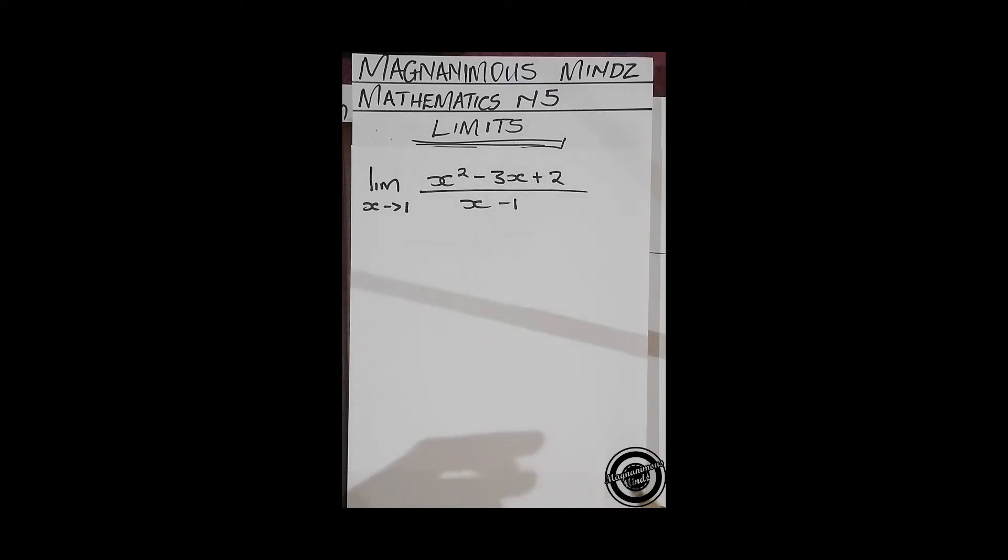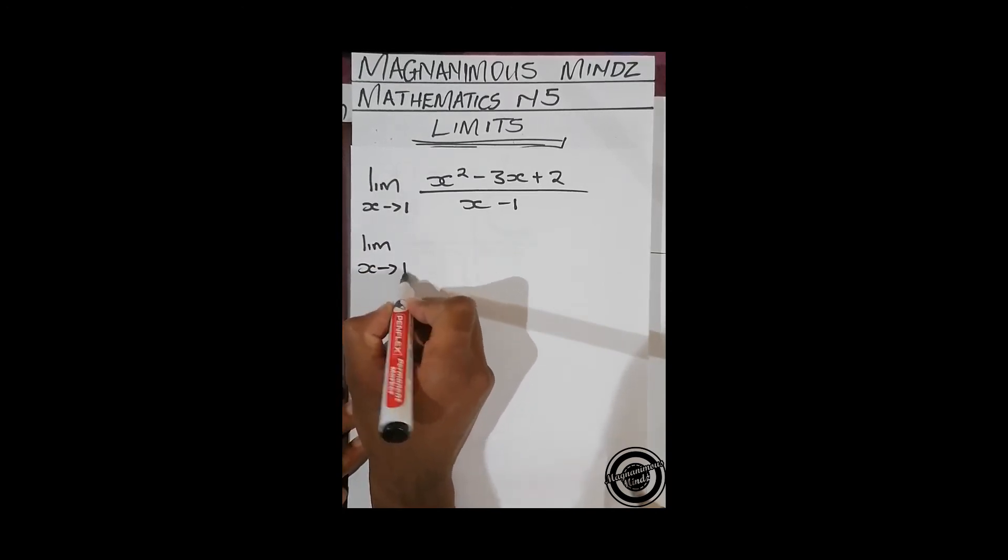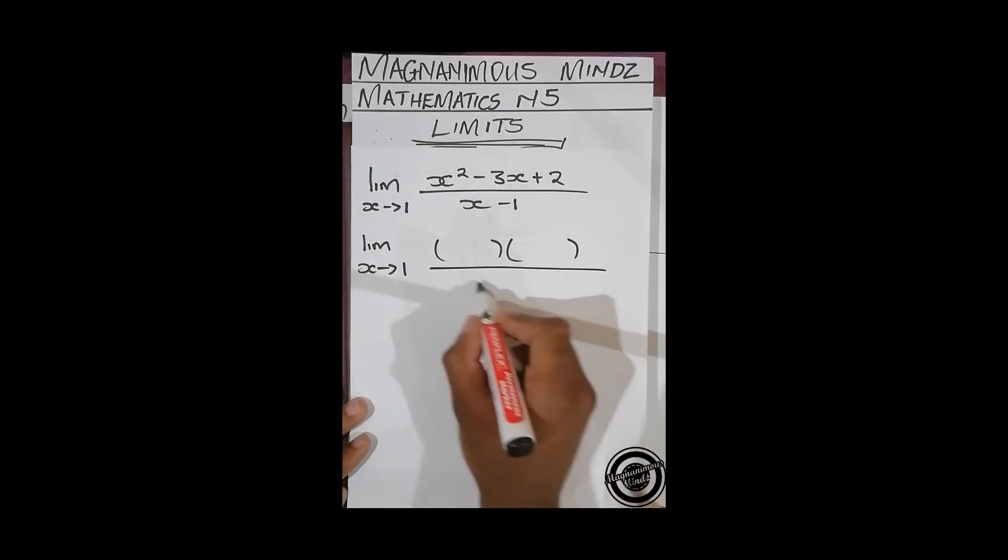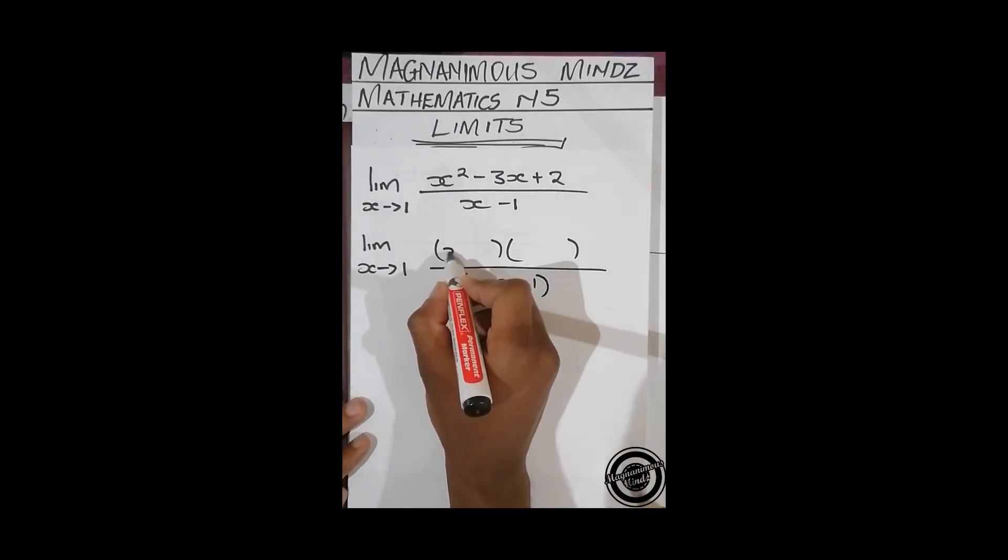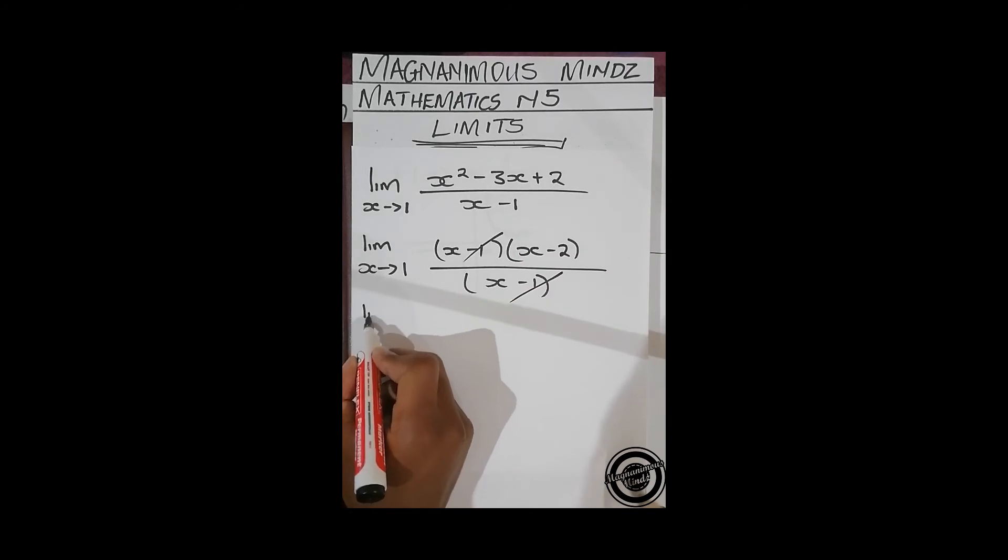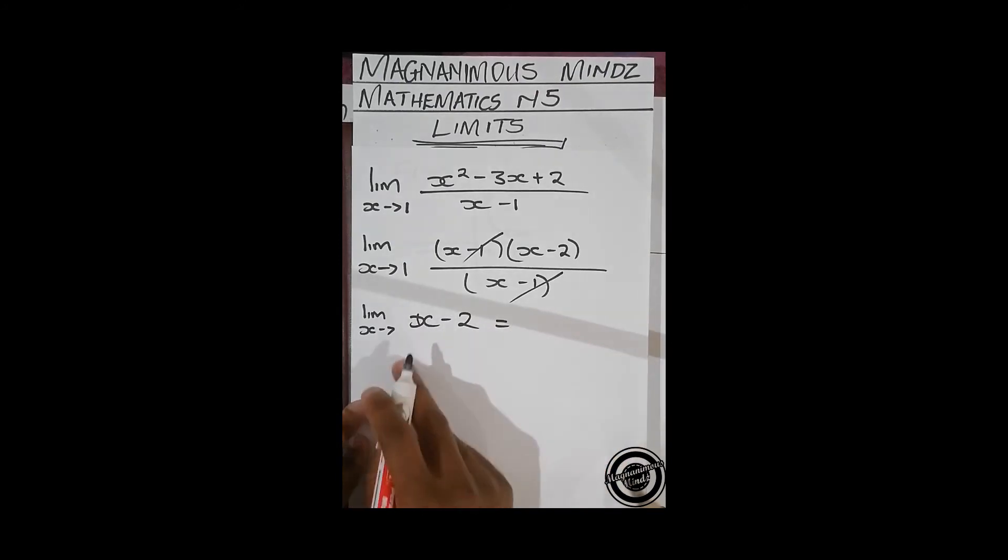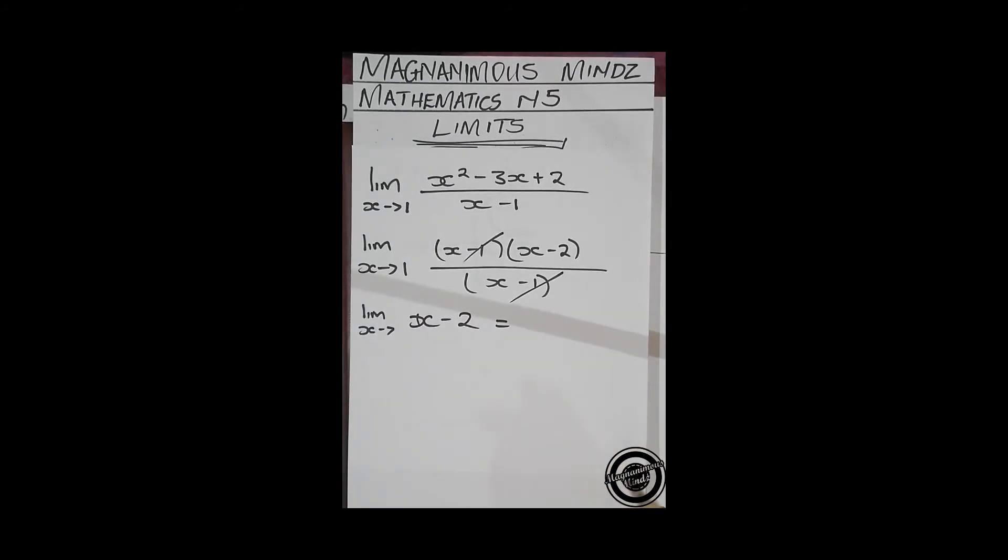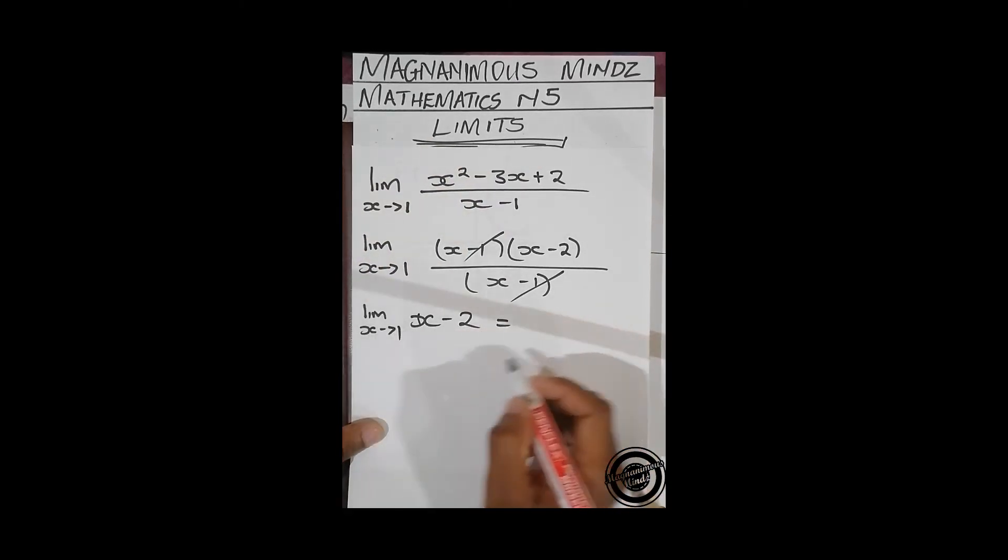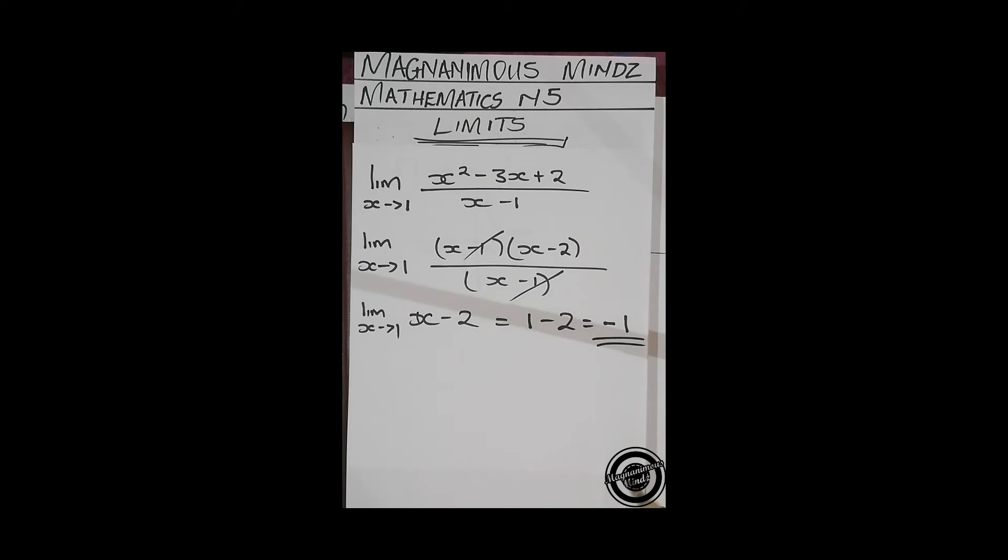In order for us to get an expression which won't be undefined or give us 0/0 or ∞/∞, which we call indeterminate limits, in this case we'll factorize. This is what we're going to do: (x - 1)(x - 2), and this and this will cancel out. We'll be left with lim x approaching 1 of (x - 2), and we directly substitute. It's going to be 1 - 2, which equals -1.